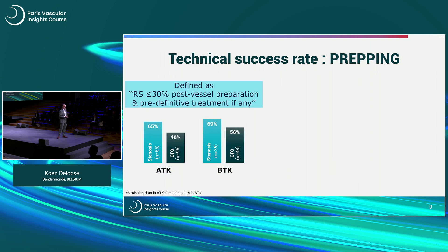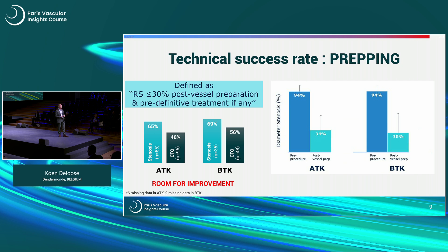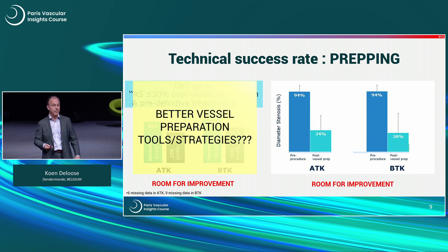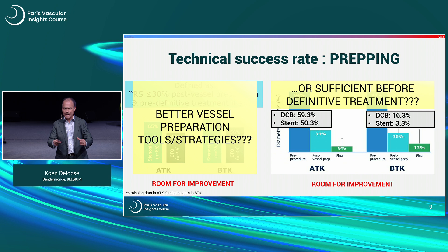Looking at the second composite endpoint — vessel preparation — there is clearly room for improvement. In above-the-knee lesions, we only reach 65–48% residual stenosis of less than 30%, depending on stenosis versus occlusions, and similarly below the knee. Post-vessel prep diameter stenosis remains 34% and 30% respectively. So we need to ask: do we need better vessel preparation tools, better strategies, or do we add definitive treatment to overcome this problem?